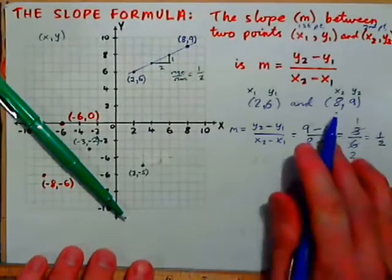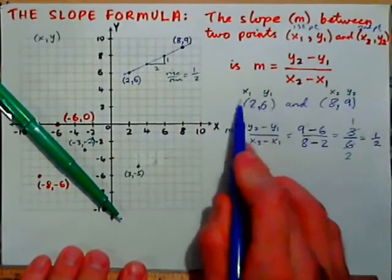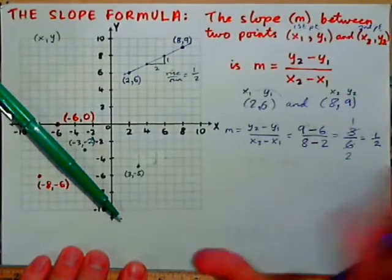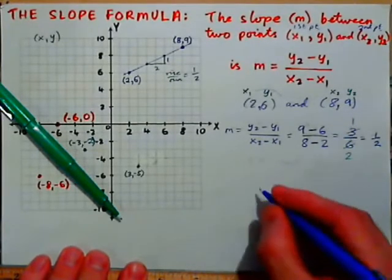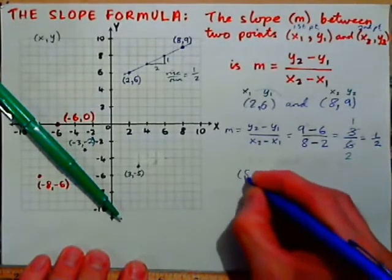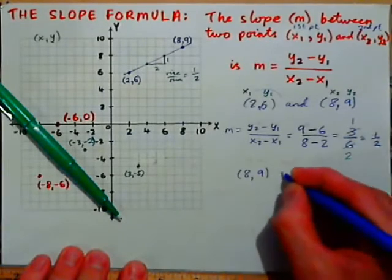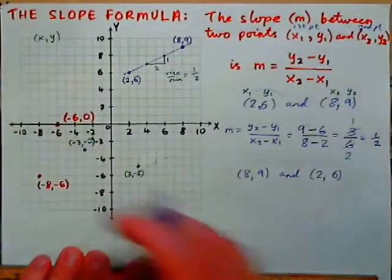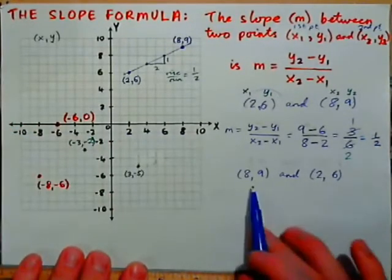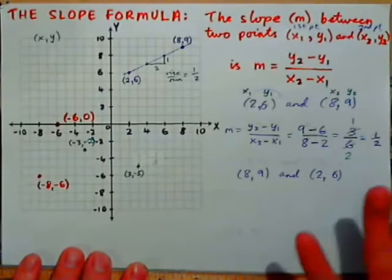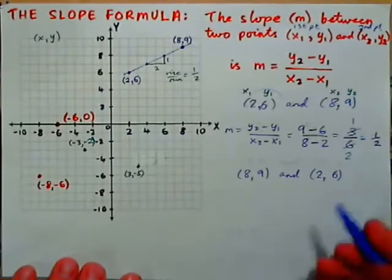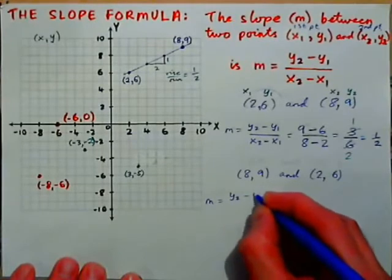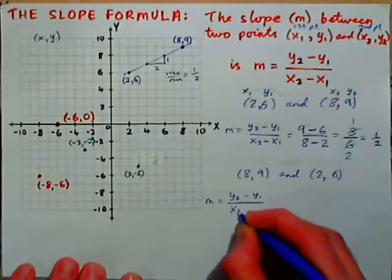Let's prove that the order of the points doesn't matter. If you had (8, 9) as the first point and (2, 6) as the second, go ahead and calculate the slope — you should get the same answer. Write down the formula: y2 minus y1 over x2 minus x1.